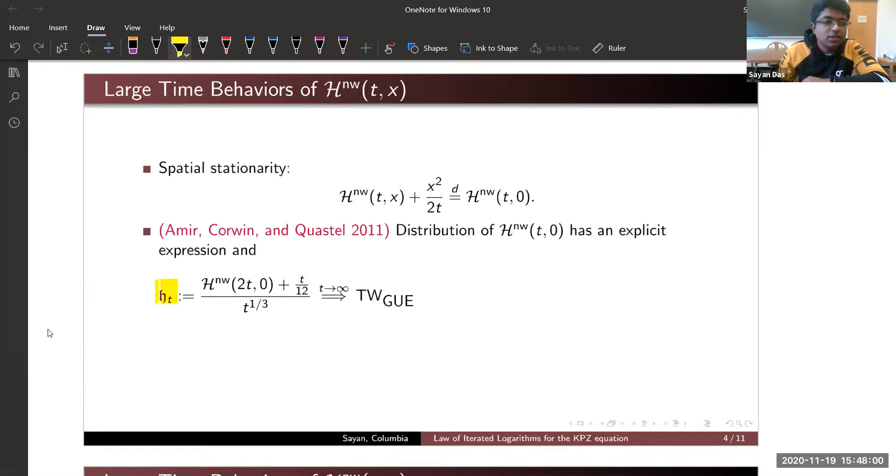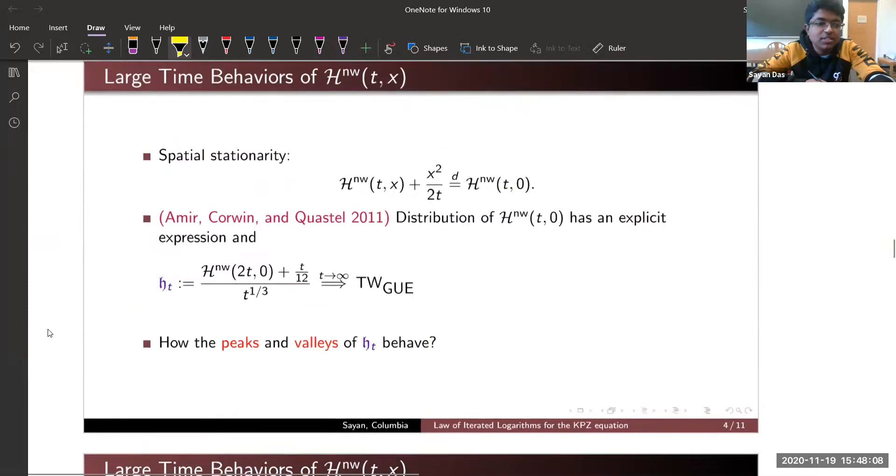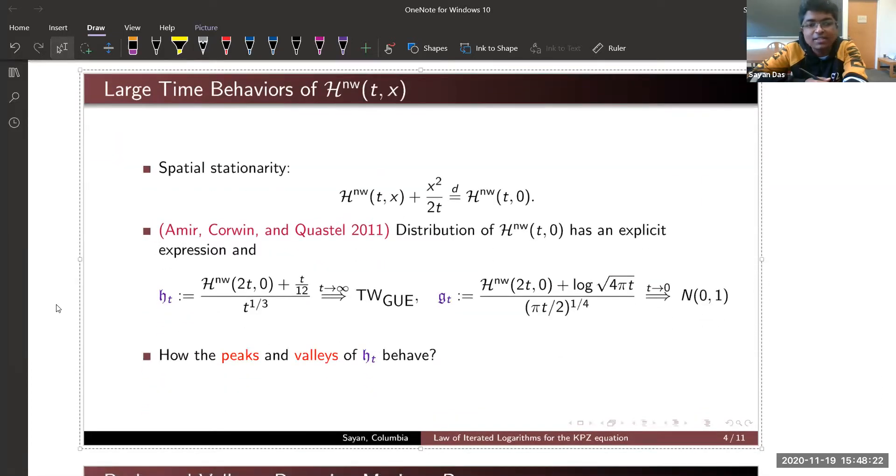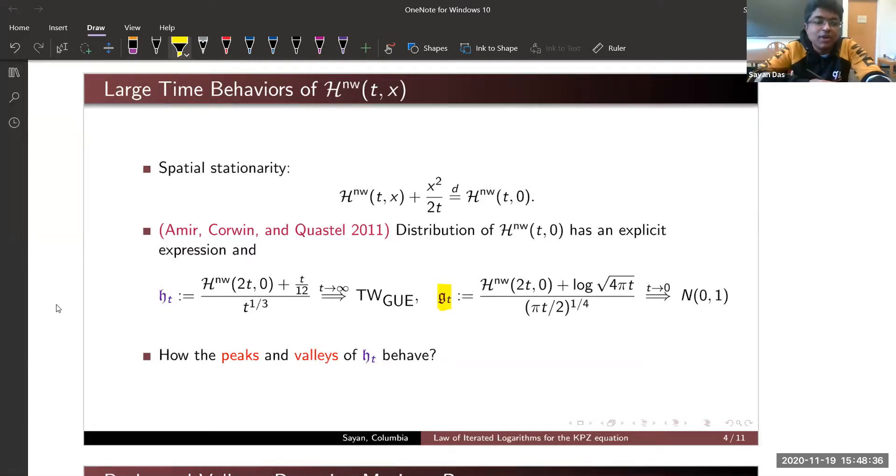In this talk my central object of interest is H_t. More specifically I am interested in how the peaks and the valleys of H_t behave. In that paper they also deal with time t tends to zero—we have Gaussian fluctuation with a different kind of rescaling, given by something known as short time scaling, which I denote as G_t. Right now it is not required but we will come back to it later.